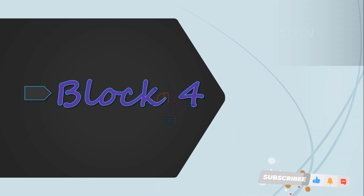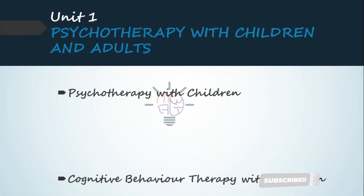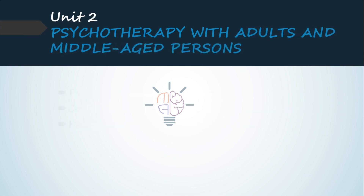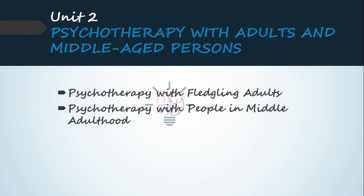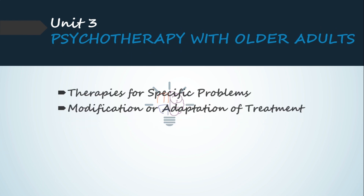From Block 4, Unit 1: Psychotherapy with Children, Cognitive Behavior Therapy with Children, Psychotherapy with Adults, and Psychotherapy with People in Middle Adulthood. From Unit 3: Therapies for Specific Problems and Modification or Adaptation of Treatment.